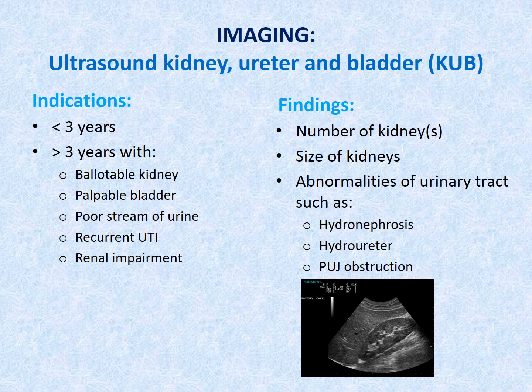Ultrasound of the kidney, ureter, and bladder is the first-line imaging for children with UTI. It is indicated in children less than 3 years. For children more than 3 years old, ultrasound KUB should be done in those with clinical findings suggestive of underlying urinary tract abnormalities such as ballotable kidney, palpable bladder, or poor stream of urine, as well as in recurrent UTI or evidence of renal impairment. Ultrasound can assess the number and size of kidneys and detect gross abnormalities such as hydronephrosis, hydroureter, and pelvi-ureteric junction obstruction.